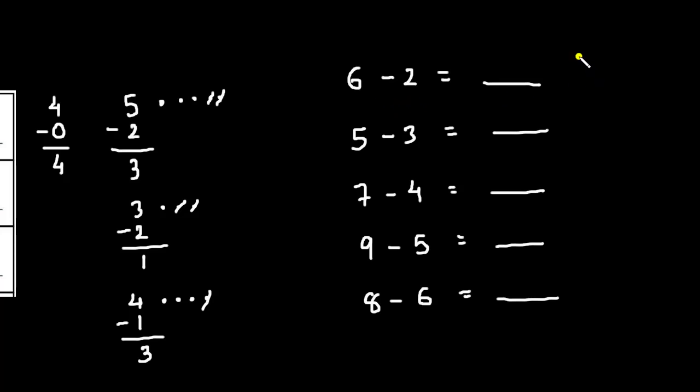Here we have 6 minus 2. So, I have 6 dots and I will cut 2 from them. So, we are left with 1, 2, 3, 4. So, answer is 4. 6 minus 2 is equal to 4.